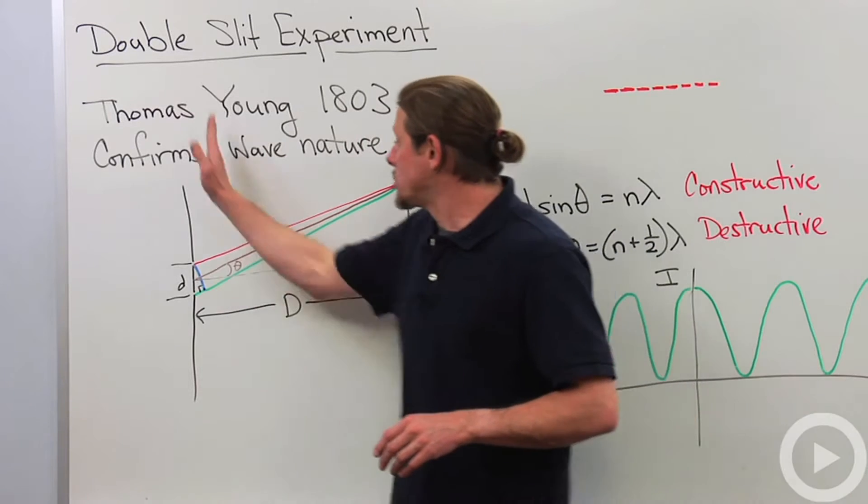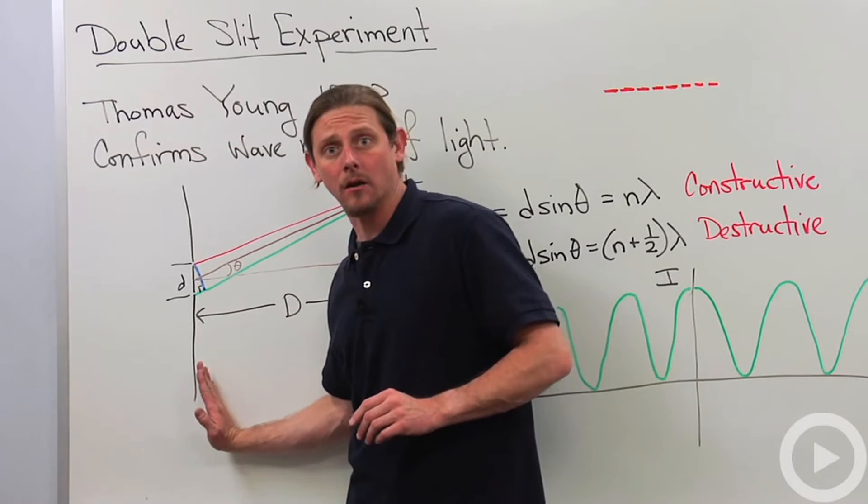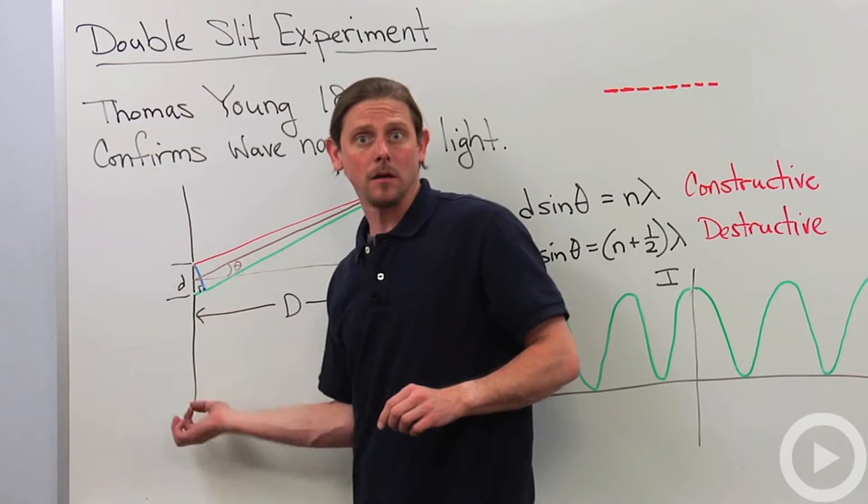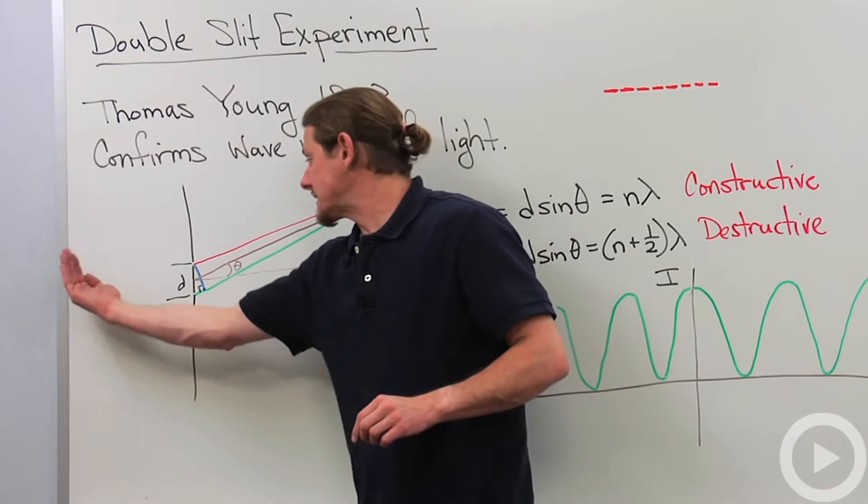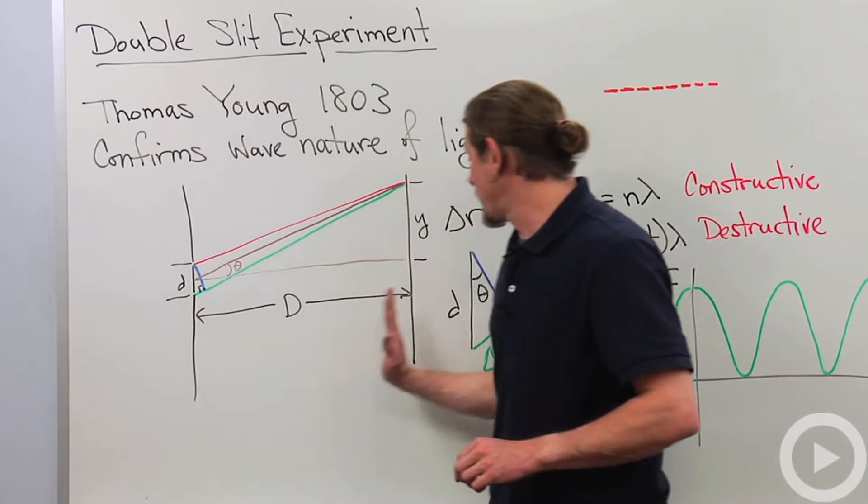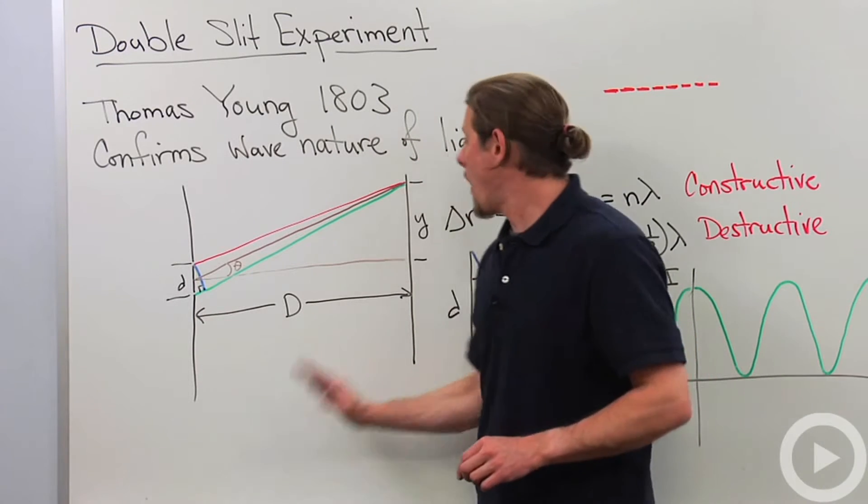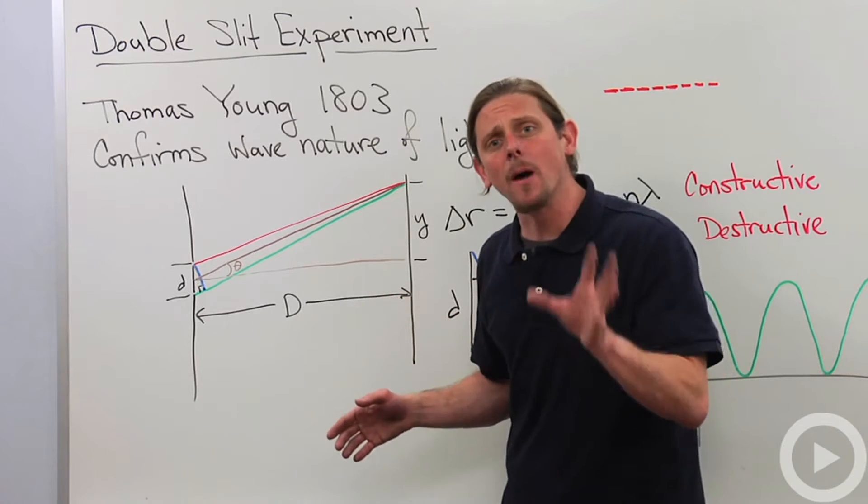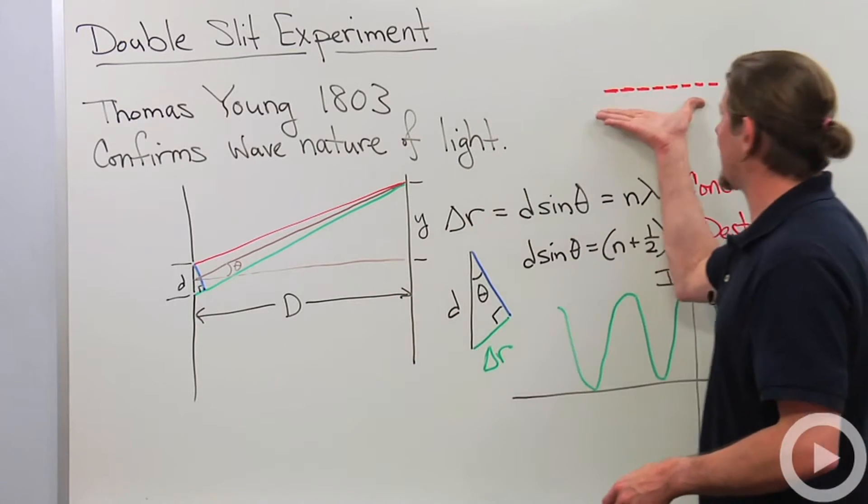And what we're going to do is we're going to have a screen here and we're going to poke two holes in this obstacle. We're going to send light through it, and then we've got a screen a distance capital D away, and we want to look at the pattern that we get.